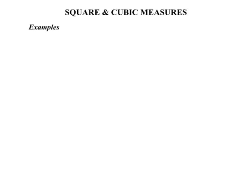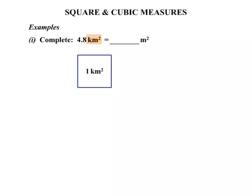Let's look at some examples now. We need to complete: 4.8 kilometres squared equals how many metres squared? Well, kilometres squared, draw a little diagram. It's essential that you're very good at drawing these little diagrams. 1 kilometre by 1 kilometre.